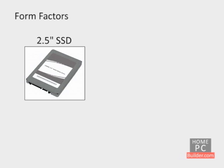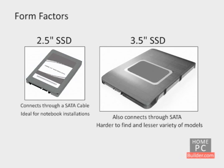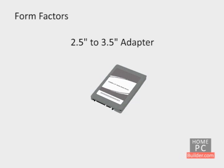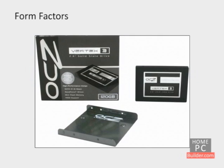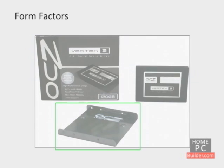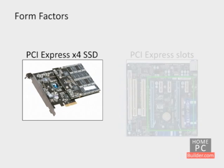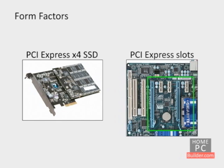Most SSDs are packaged like 2.5-inch hard drives and connect to the system using a SATA data cable. The 2.5-inch size makes them ideal for installation in a notebook computer. 3.5-inch SSDs are available but not easy to find, and there is a much greater variety of 2.5-inch SSDs. To install a 2.5-inch drive into a desktop computer, you will need a 2.5-inch to 3.5-inch adapter, available at most local and online computer stores for $5 to $15. Some 2.5-inch SSDs come as a kit with the adapter. SSDs that come in expansion card form and connect through a PCI Express slot on the motherboard are another option, allowing much faster transfer rates than even SATA 3.